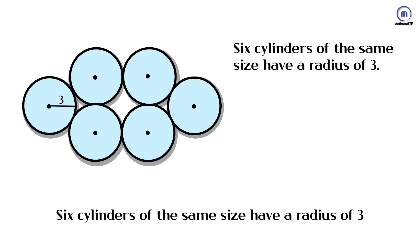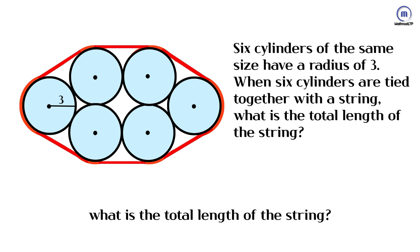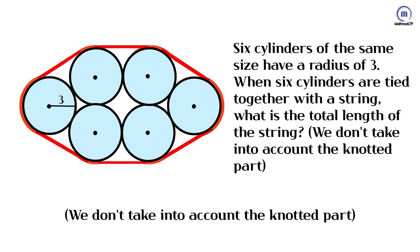Six cylinders of the same size have a radius of 3. When six cylinders are tied together with a string, what is the total length of the string? We don't take into account the knotted part.